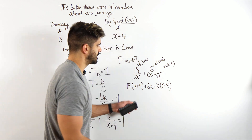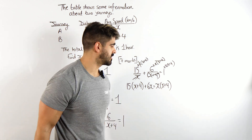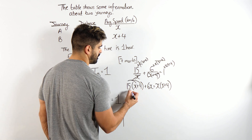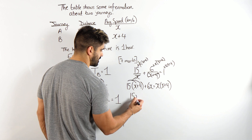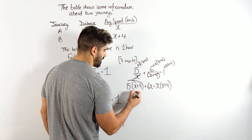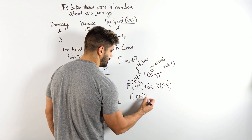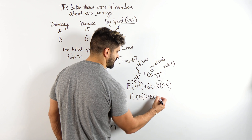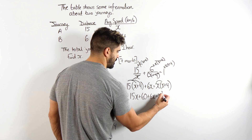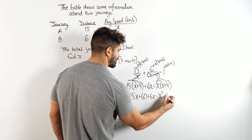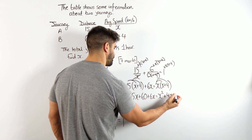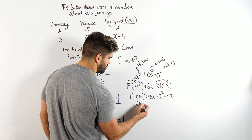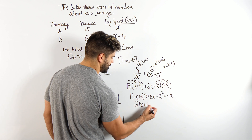So it's a quadratic — we're going to have to solve this quadratic. We're going to expand everything. 15 times x is 15x, plus 15 times 4 is 60, plus 6x equals x squared plus 4x. We can simplify this — combining the x terms gives us 21x plus 60 equals x squared plus 4x.